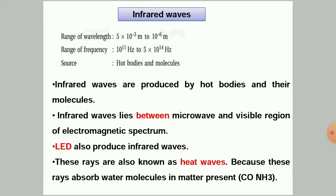Infrared waves have a wavelength range from 5×10⁻³ meters to 10⁻⁶ meters, and a frequency range from 10¹¹ Hertz to 5×10¹⁴ Hertz. These infrared waves are produced by hot bodies and their molecules. These waves lie between the microwaves and visible region of the electromagnetic spectrum. Infrared waves can also be produced from LEDs, and they are also known as heat waves.